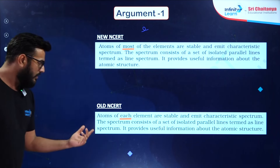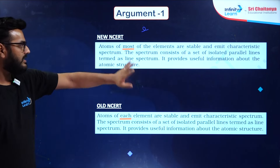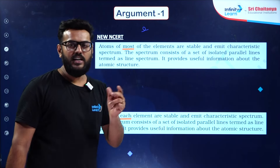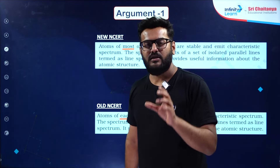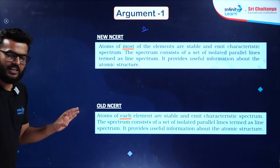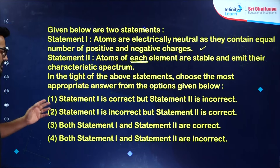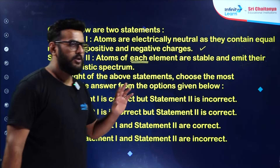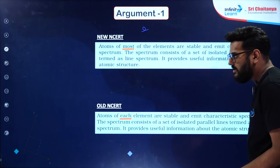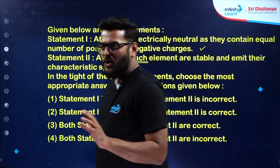They both read 'they emit characteristic spectrum.' This one change — 'each' to 'most' — is the main problem. If you follow the new NCERT, Statement 2 becomes wrong, and the correct answer is Statement 1 correct and Statement 2 incorrect. But if you go by the old NCERT which says 'each,' then both statements are correct and option 3 is the correct answer.